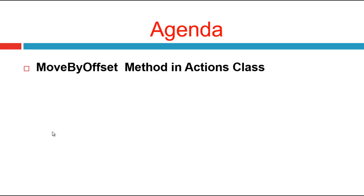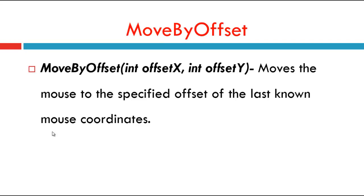The agenda is the MoveByOffset method in the Actions class. The MoveByOffset method takes x and y coordinates — that is int offsetX and int offsetY — and it moves the mouse to the specified offset of the last known mouse coordinates.